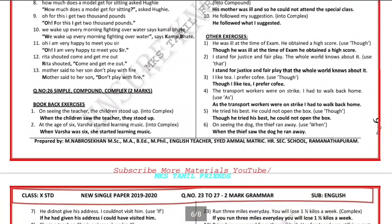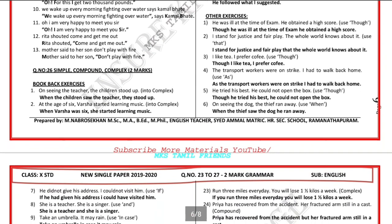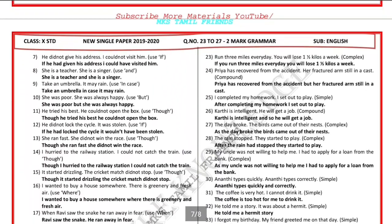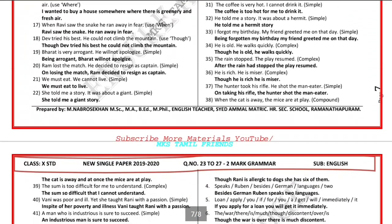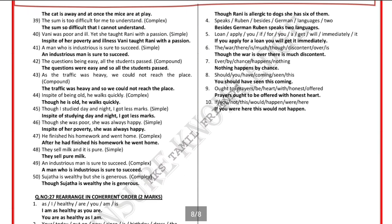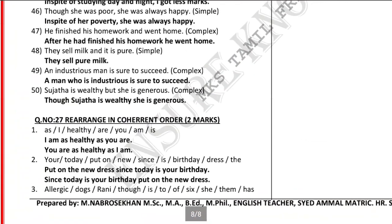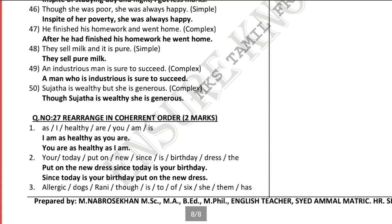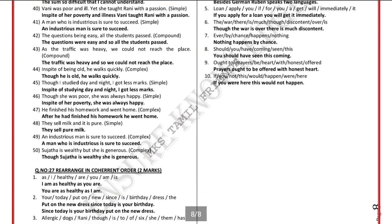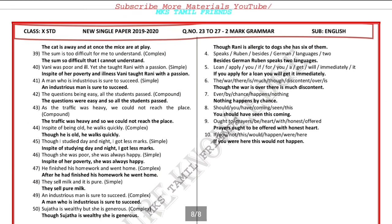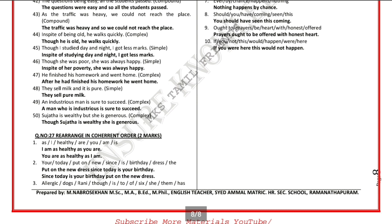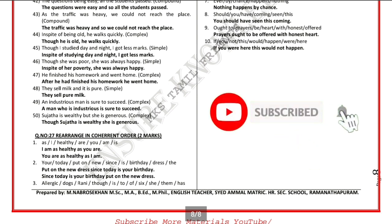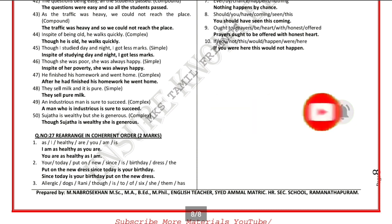Question number 26 is compound and complex sentences — this is the book pack exercise and additional exercise. Question number 27 is word reordering. For example: 'As — Healthy — Are You — Am — Is' reordered gives 'I am as healthy as you are.'